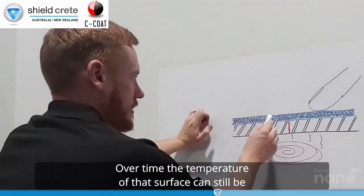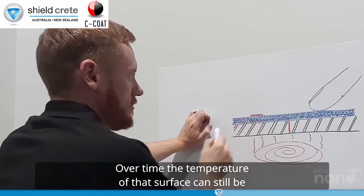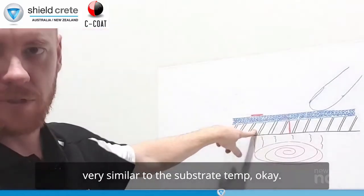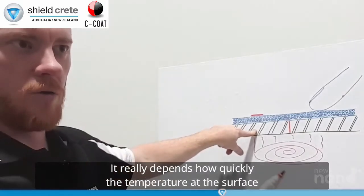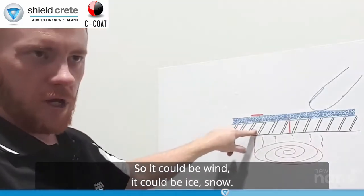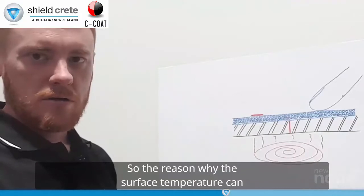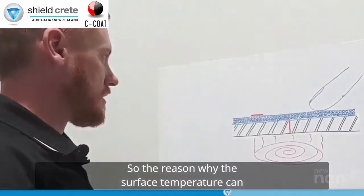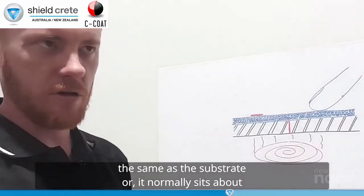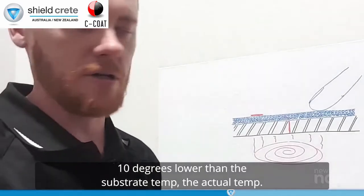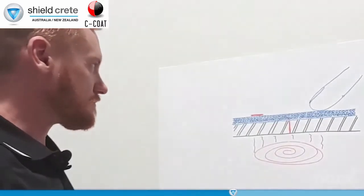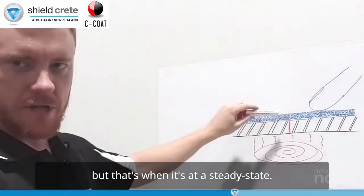So what that means is you still get that surface temperature here over time. The temperature of that surface can still be very similar to the substrate temp. It really depends how quickly the temperature at the surface is being wicked away by other elements. So it could be wind, it could be ice, snow. So the reason why the surface temperature can essentially be the same as a substrate or it normally sits about 10 degrees lower than the substrate temp, the actual temp, just because the ambient air can wick away a certain amount of heat.